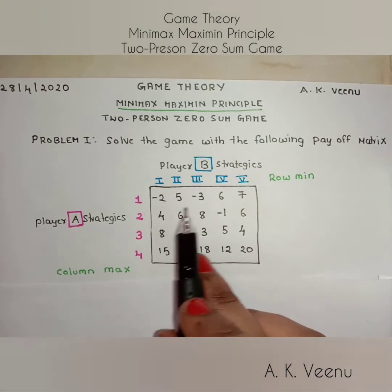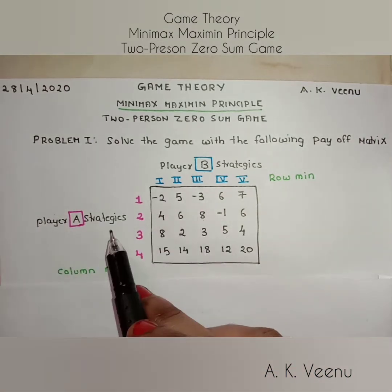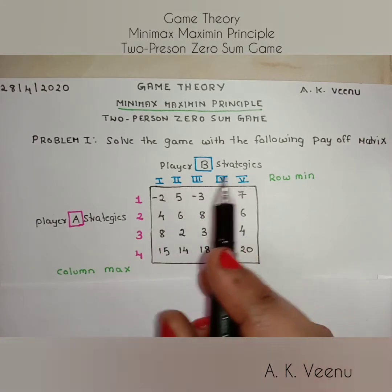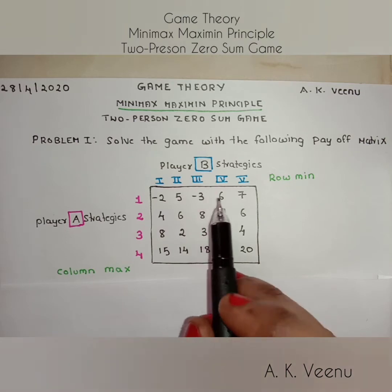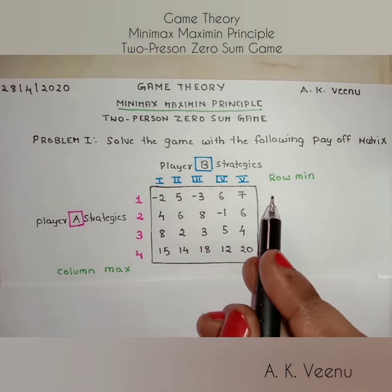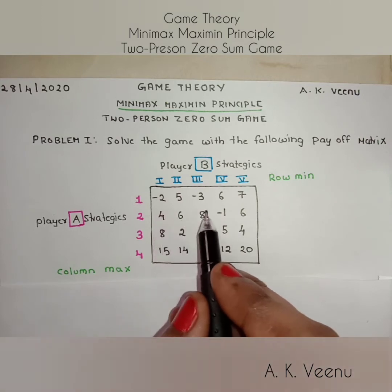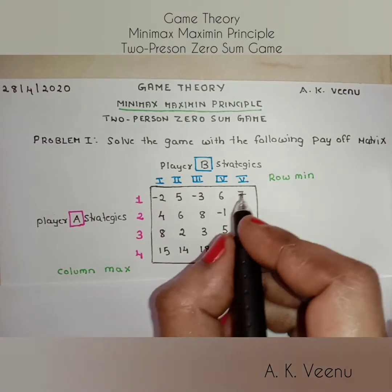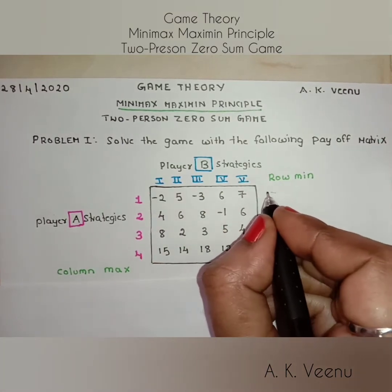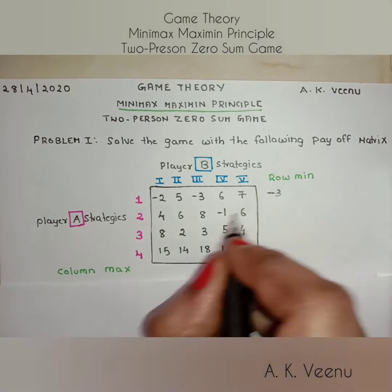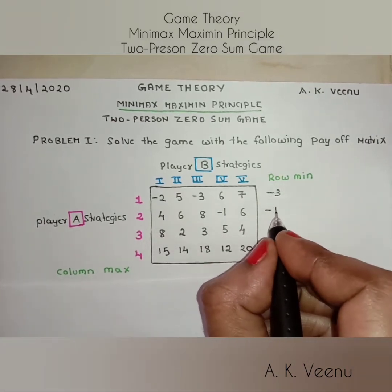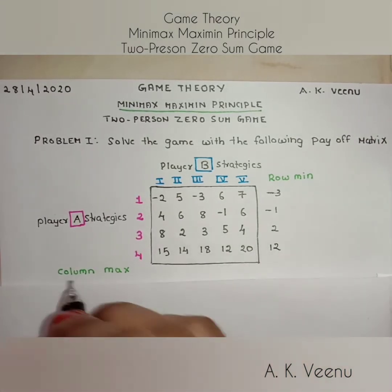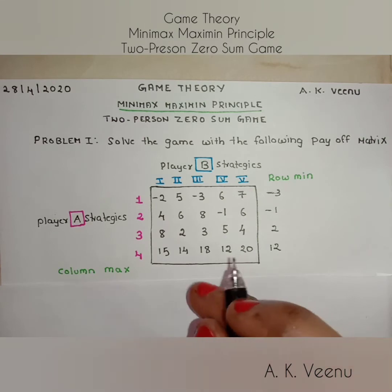Here we have a payoff matrix of player A and B with four rows and five columns respectively. To proceed we have to find the row minimum. Let's consider the first row of player A — the least value is minus three. The remaining row minimums are minus one, two, and twelve.